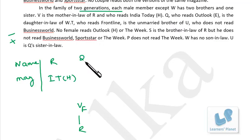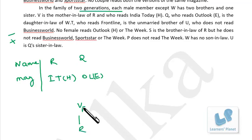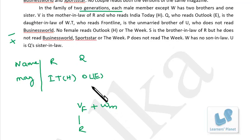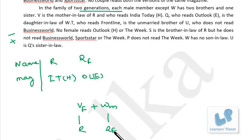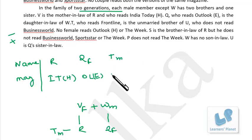Q reads Outlook and is the daughter-in-law of W. Since there are only two generations and V is already in the older generation, V and W must be husband and wife — V female, W male. Q is female. T, who reads Frontline, is the unmarried brother of U. Except W, each male member has two brothers and one sister, so there are three males in the younger generation.